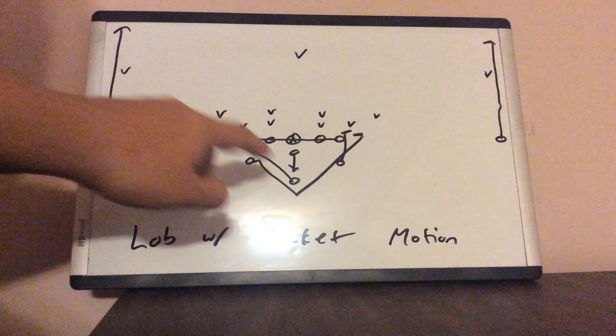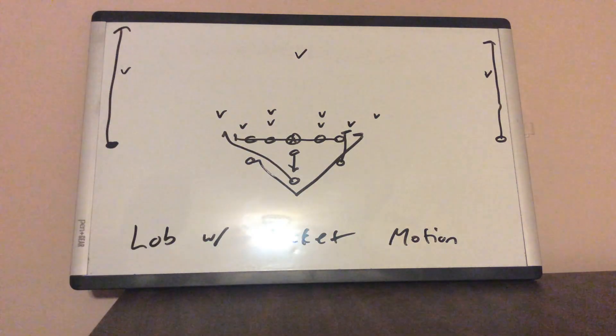And it's real simple. The B-back will go away. You're going to have eight people in protection. The receivers are going to run straight down the field.